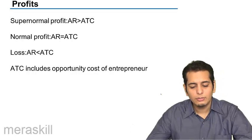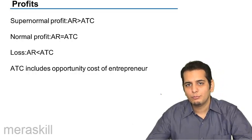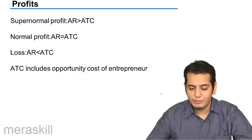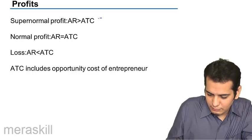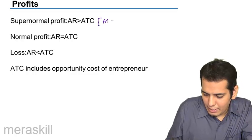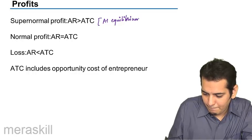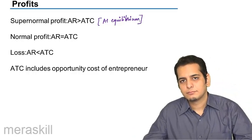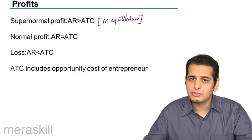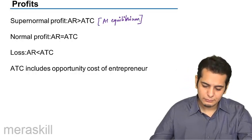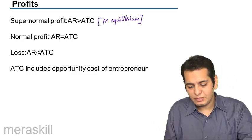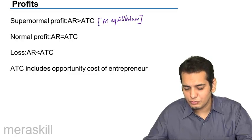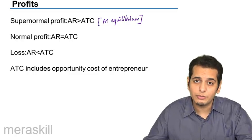The firm will earn super-normal profits when the average revenue is more than the average total cost at equilibrium. We know that equilibrium is at the point where MC is equal to MR, so at that point, if average revenue is more than average total cost, the firm will be earning super-normal profits.